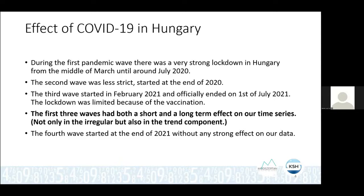Our idea was that these three waves both had a short and a long-term effect on our time series. For example, in the first wave, all restaurants needed to be closed, but some of them never opened again. So it has a short effect where every restaurant was closed, and also a long-term effect because some never opened again. We tried to find a solution where all these things have an effect not only on the irregular component but also on the trend component. There was also a fourth wave starting at the end of 2021, but it had no strong effect on our data because there was no real lockdown in that period.